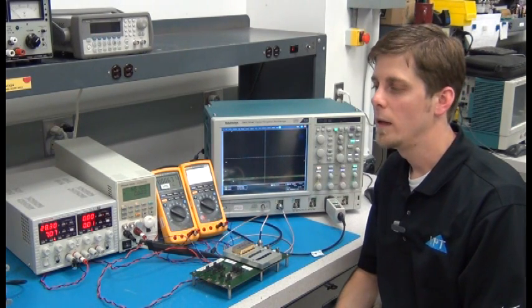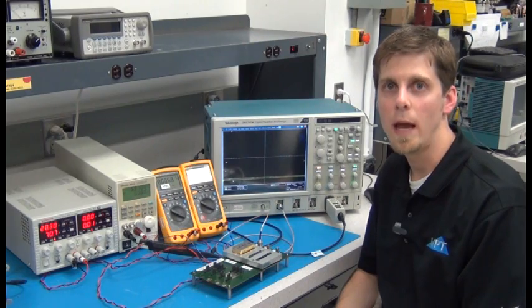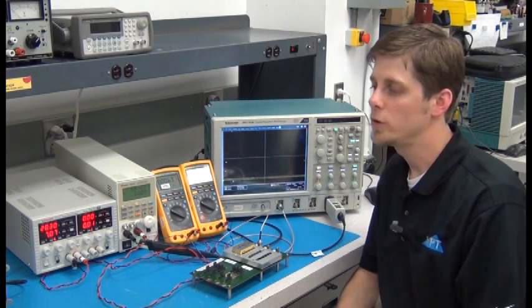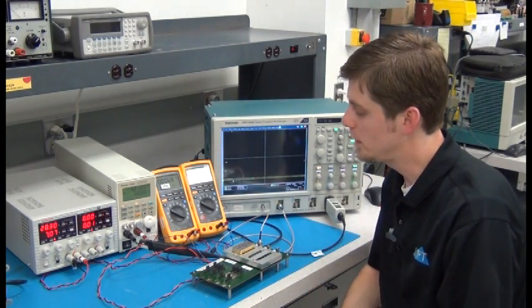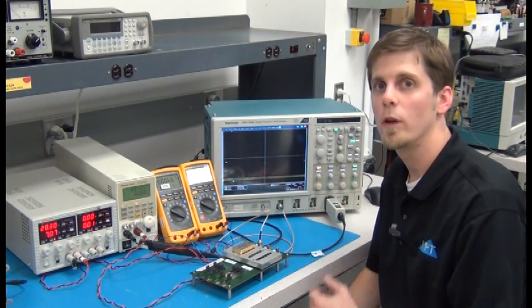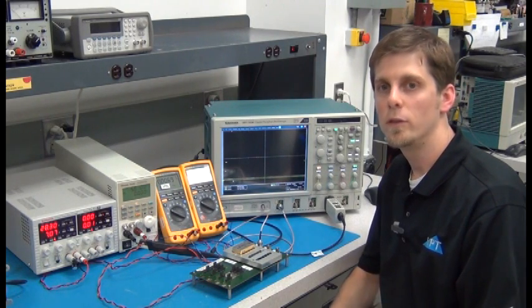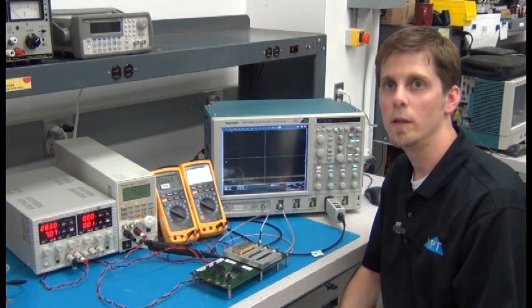What I want to show today is what happens when a short circuit is applied to the output. I'm going to apply a short circuit to the output of this DVTR 2815S, and we're going to look at what the output voltage and the output current does in the transient when the short circuit is applied.